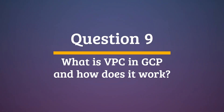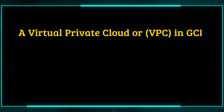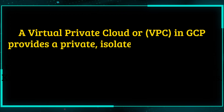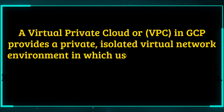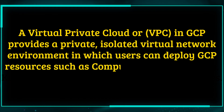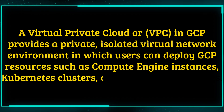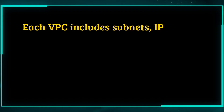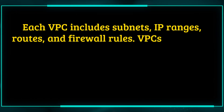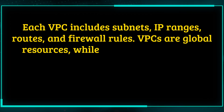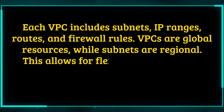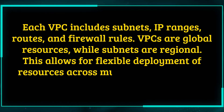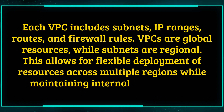Question 9. What is VPC in GCP and how does it work? A virtual private cloud, or VPC, in GCP provides a private, isolated virtual network environment in which users can deploy GCP resources such as Compute Engine instances, Kubernetes clusters, and Cloud SQL databases. Each VPC includes subnets, IP ranges, routes, and firewall rules. VPCs are global resources, while subnets are regional, allowing for flexible deployment of resources across multiple regions while maintaining internal connectivity.